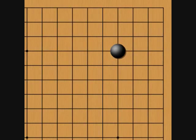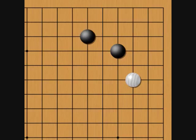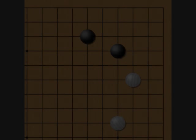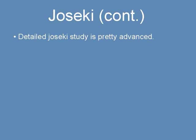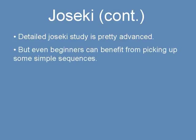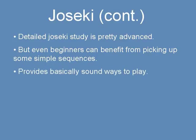If black opens on the star point, white has a good approach here. The most standard, if somewhat counterintuitive, response for black is here, after which white settles on this side. In-depth Joseki study is pretty advanced, but even beginners can benefit from picking up some simple sequences like this, at least to provide some basically sound ways to play and can't go too wrong.